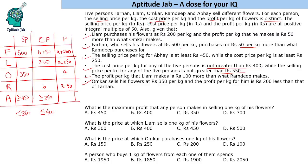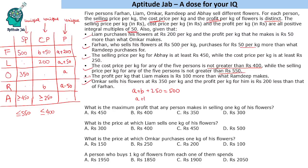The constraint is that cost price, profit, and selling price values will all be distinct. Since selling price equals cost price plus profit, for Farhan we get: (x plus 200) plus (B plus 50) plus profit equals 500. This gives us A plus B equals 250, where A represents Omkar's profit.